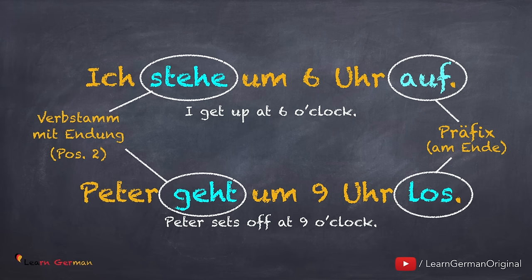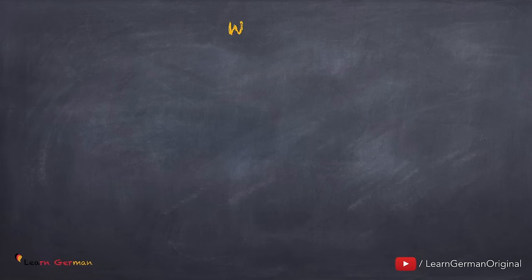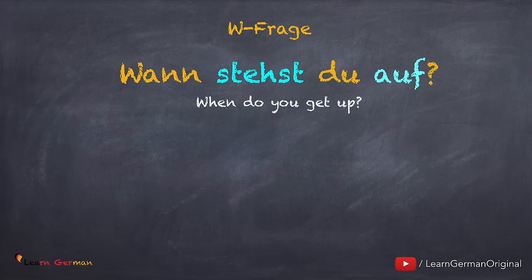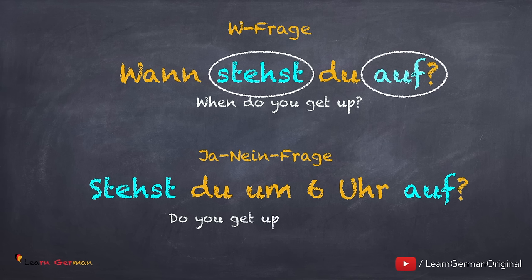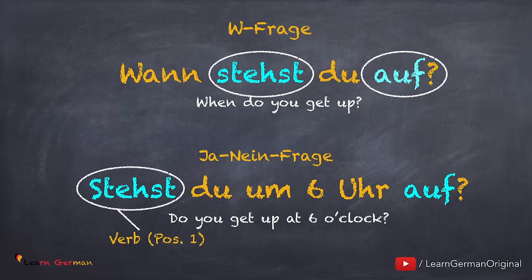Now let's look at another type of sentence — the V-Frage. What happens to the verb in this case? 'Wann stehst du auf?' In this case also the conjugated verb is at the second position whereas the prefix is at the end. What about the Ja-Nein Frage? 'Stehst du um 6 Uhr auf?' In this case the conjugated verb is at the first position whereas the prefix is still at the end of the sentence.